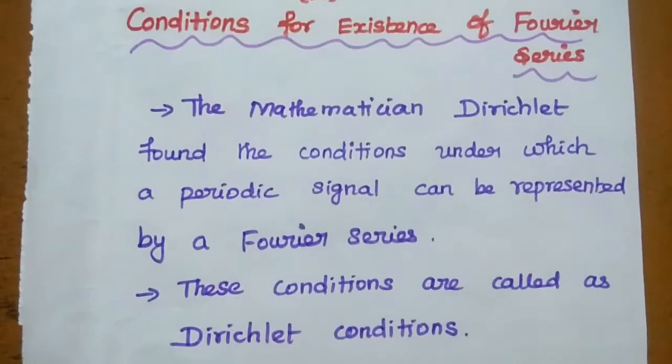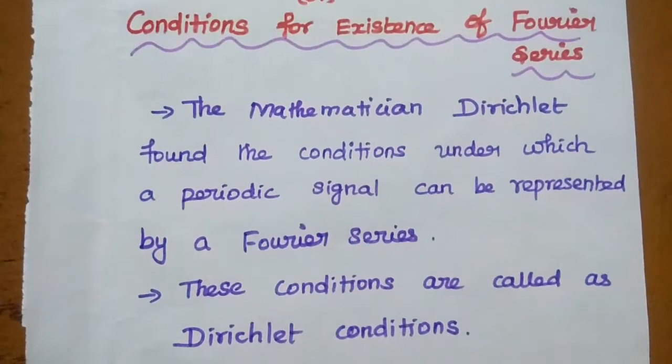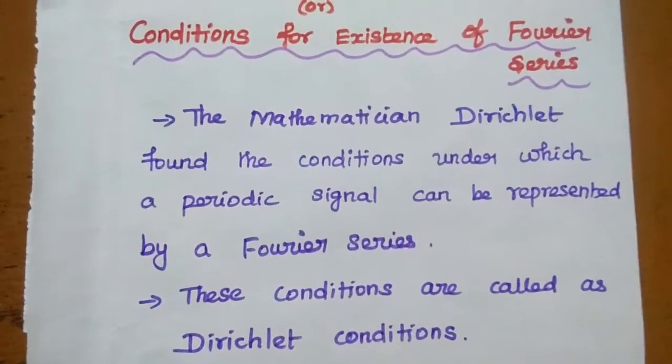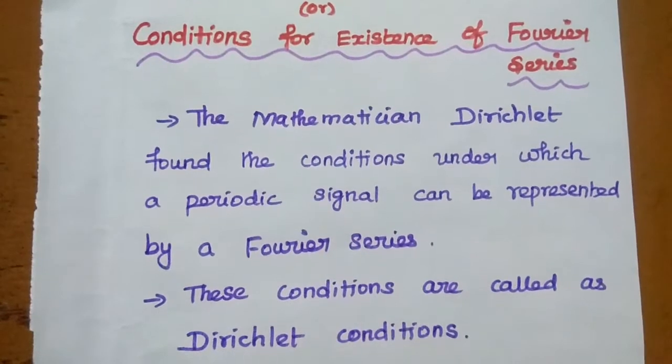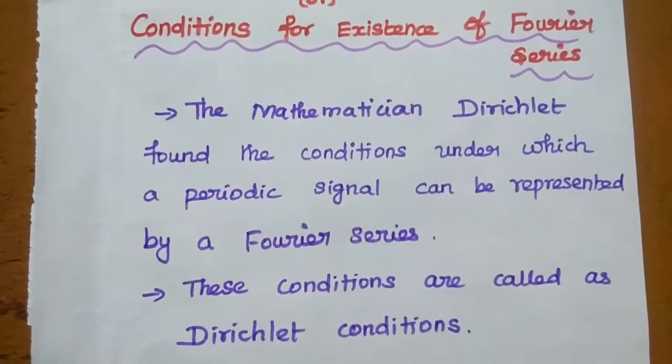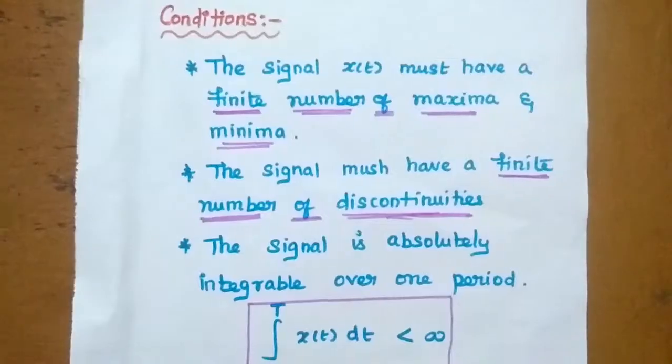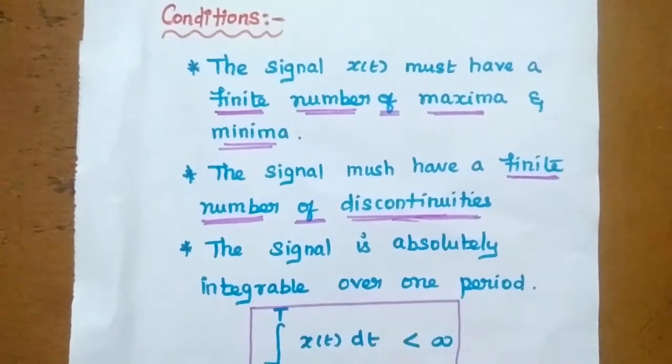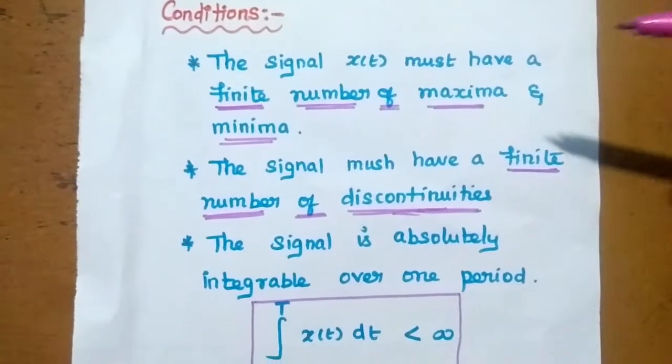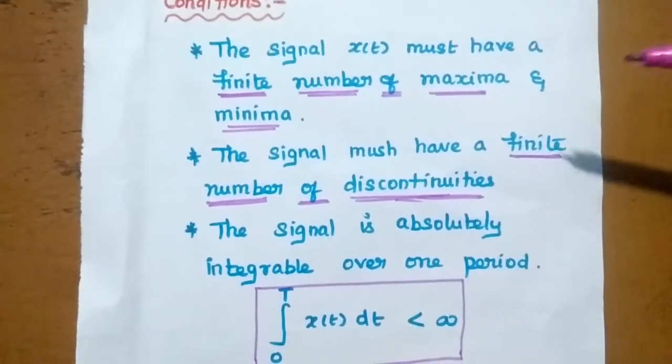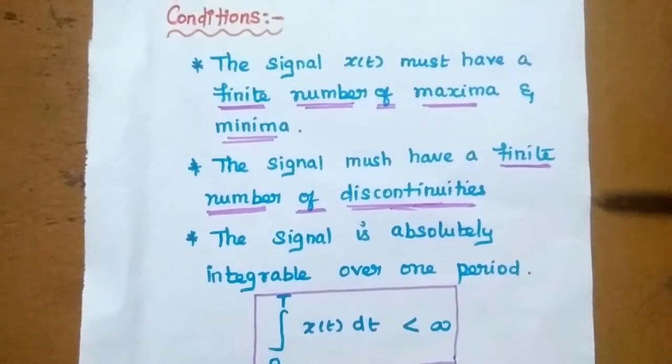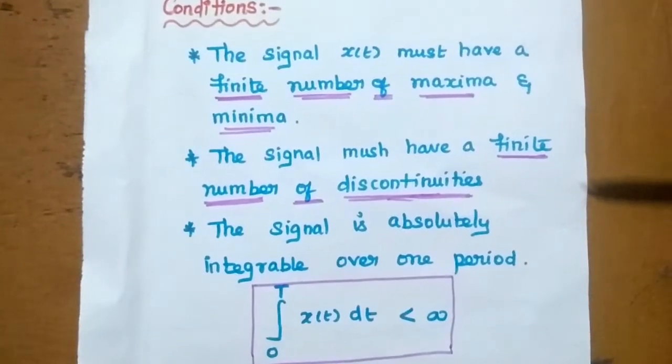The mathematician Dirichlet formed the conditions under which a periodic signal can be represented by a Fourier series. These conditions are called as Dirichlet conditions or conditions for existence of Fourier series. So what are the Dirichlet conditions? Let's see the conditions first and then explain each condition. There are three important conditions.